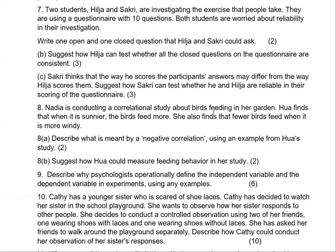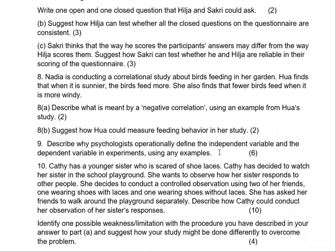Nadia is conducting a correlational study about bird-feeding in her garden. She finds that when it is sunny, the birds feed more, and that fewer birds feed when it is more windy. Describe what is meant by a negative correlation using an example from Nadia's study. Suggest how Nadia could measure the wind variable in her study, and operationally define the independent and dependent variables in an experiment using any example.